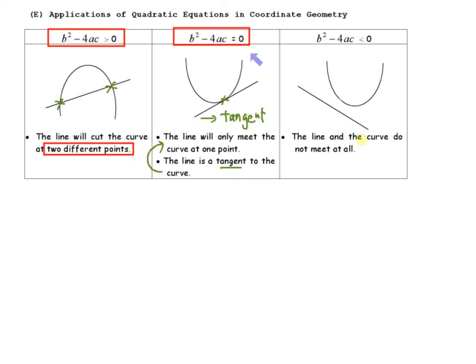The last condition is where the line and the curve do not meet at all — there are no intersection points. For this case, you use b squared minus 4ac less than 0.